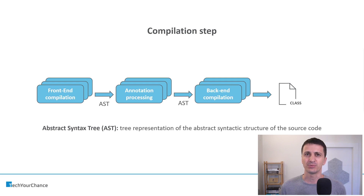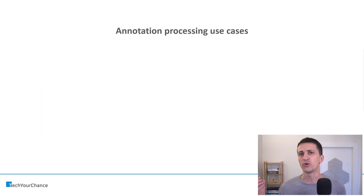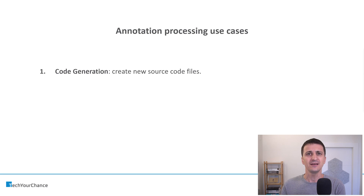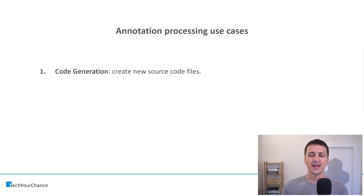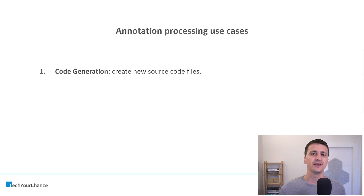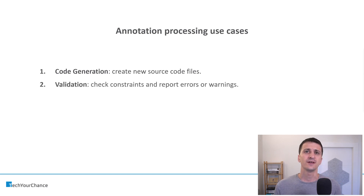What does annotation processing do? Let's discuss the use cases. The first one is code generation. Annotation processing can inspect the AST, find out which elements are annotated, and generate code based on those specifications. The best examples of code-generating annotation processors in the Android ecosystem are the Room library, which takes annotations on entity classes and generates databases and tables from them, and the Dagger dependency injection framework, which takes annotations on classes and generates dependency injection infrastructure inside your application.